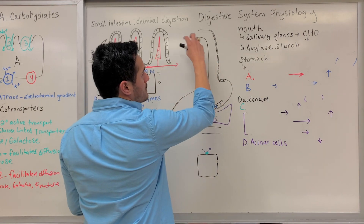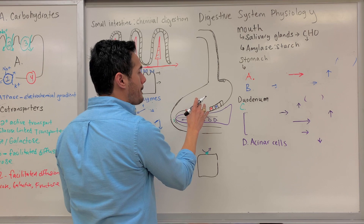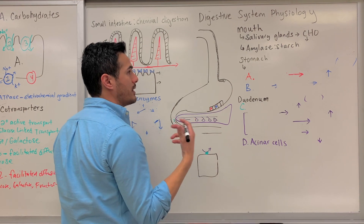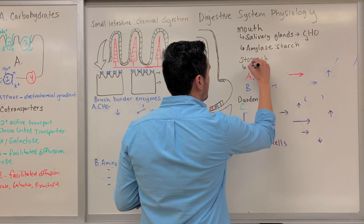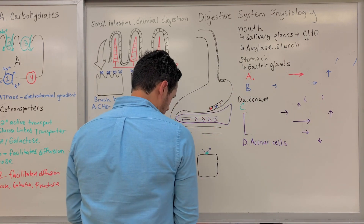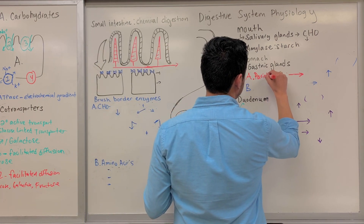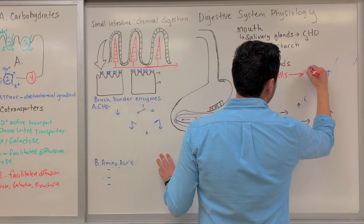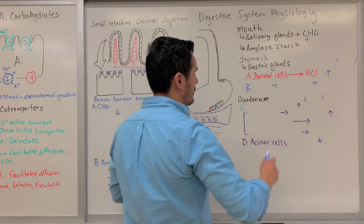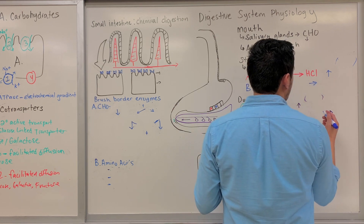Once we start to digest the food, the bolus travels down the esophagus, and then it becomes chyme here in the stomach. This fluid-like mixture here in the stomach — we're further digesting the food we've consumed, but we're mainly focusing on breaking down proteins. Within the stomach, we have gastric glands, and some of these specific gastric glands include what's known as the parietal cells. These parietal cells secrete what's known as hydrochloric acid.